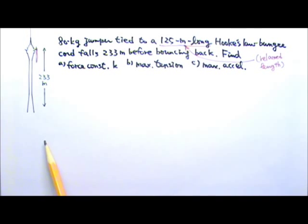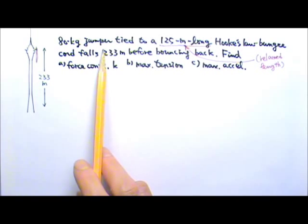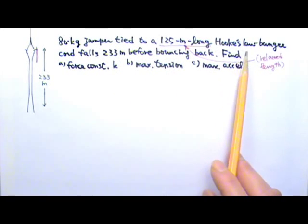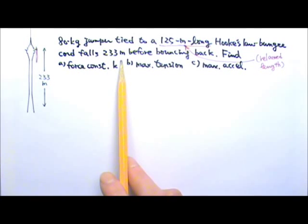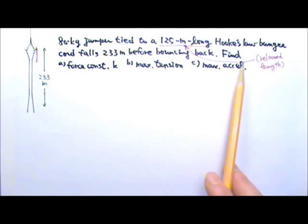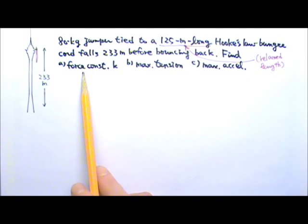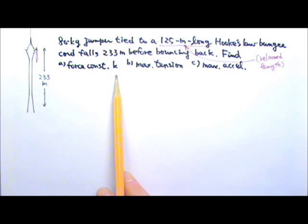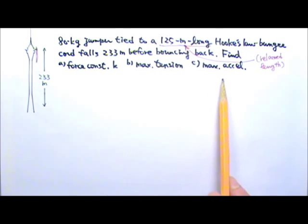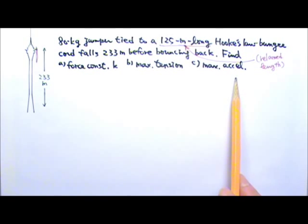The world's highest commercial bungee jump is probably the one at Macau Tower in Macau. Suppose an 80 kg jumper tied to a 125 m long relaxed bungee cord falls a total of 233 m before bouncing back. Find the force constant K of the bungee cord, the maximum tension in the bungee cord, and the maximum acceleration experienced by the jumper.